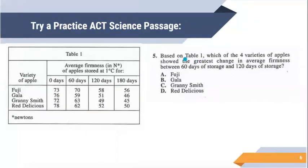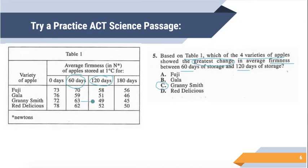Try question five — it is also about table one. Question five asks which of the four varieties of apples showed the greatest change in firmness between 60 and 120 days. We're comparing the 60-day column to the 120-day column. Paying attention to labels helps identify which part of the table is important. The biggest change among the four varieties would be C, Granny Smith, which changed from 63 to 49 — that is a big change in firmness.